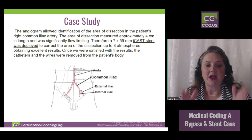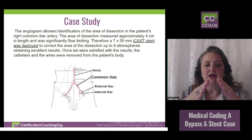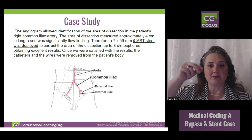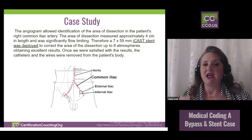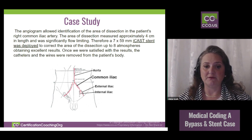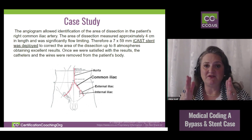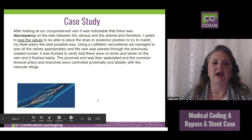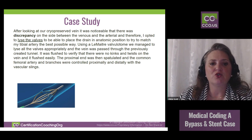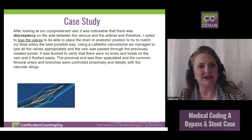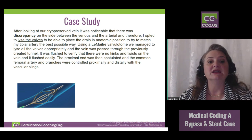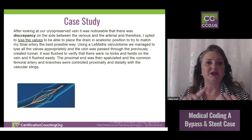We understand the anatomy: we've got the aorta going into the common iliac, then the external and internal iliac — meaning it forks again. It just forks and forks just like a tree. Then they looked at their cryopreserved vein and noticed there was a discrepancy — that's a key word. Are they going to be able to use it? Is there a complication? If you see words like 'complication' or 'discrepancy,' that should flag you that something could be going wrong.